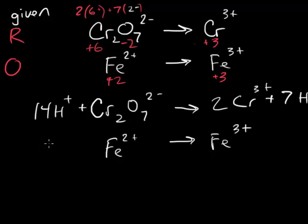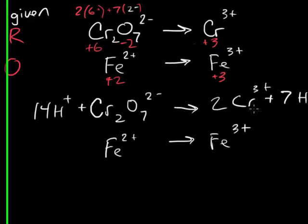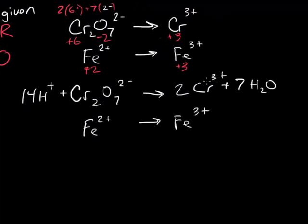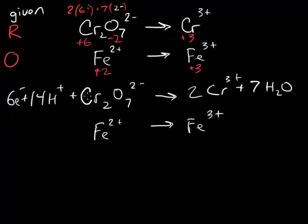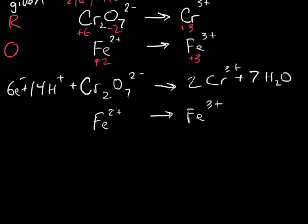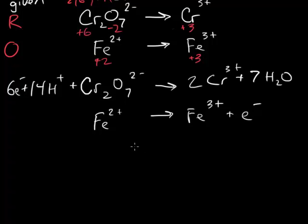Our next step is to balance the total charge by adding electrons. So here we can see we've got 14 positive and two negatives, so that's going to be 12 positive. And over here we have 3 times 2, it's 6 positive. So this is 12 positive, that's 6 positive, so we would need 6 electrons on the left side to balance the electrons. Then on this one we've got 2 positive and 3 positive, so we would need one electron down here on the bottom to make this amount of electrons equal total charge.